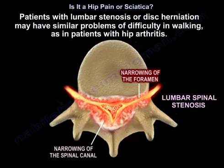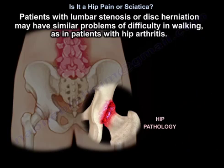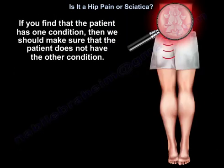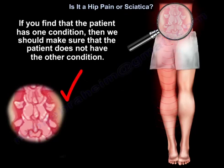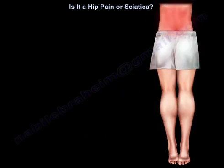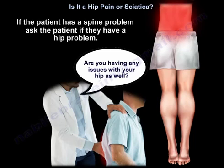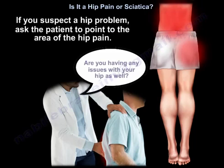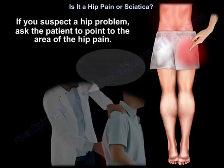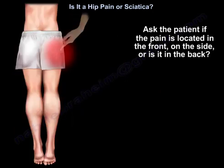Patients with lumbar stenosis or disc herniation may have similar difficulty in walking as patients with hip arthritis. If you find that the patient has one condition, make sure the patient does not have the other. If the patient has a spine problem, ask if they also have a hip problem. If you suspect a hip problem, ask the patient to point to the area and whether the pain is in the front, on the side, or in the back.